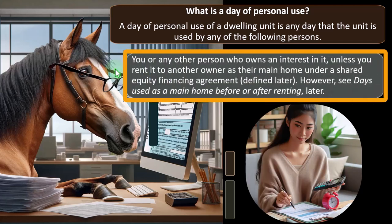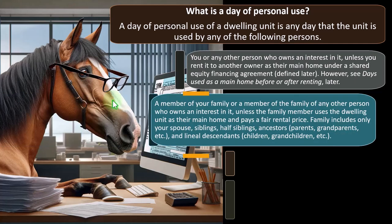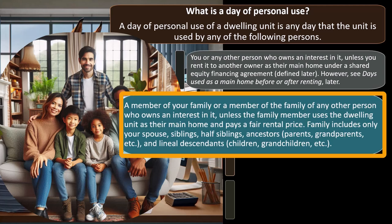Personal use includes any other person who owns an interest in the unit, unless you rent it to another owner as their main home under a shared equity financing agreement. A member of your family, or a member of the family of any other person who owns an interest in it, also counts — unless the family member uses the dwelling unit as their main home and pays a fair rental price. You must be very careful with related people, as the IRS will say it's not an arm's-length transaction and require proof of fair market pricing.